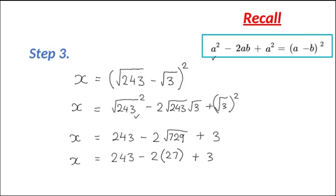So all we need to do now is calculate this out. We get 243 minus 2 by 27, which is minus 54, plus 3. So let's put them all together and calculate the answer.